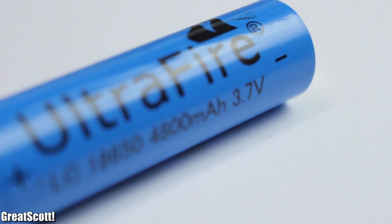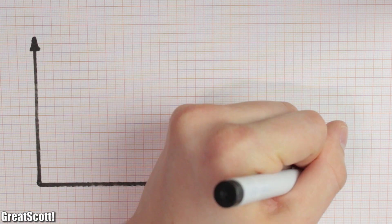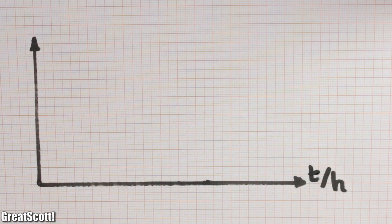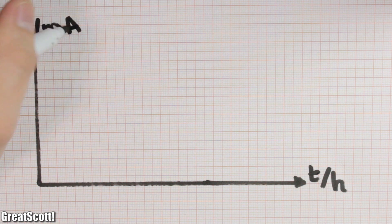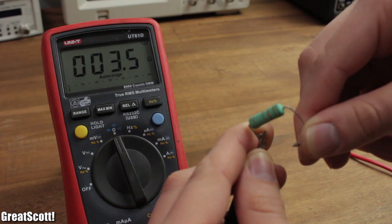First of all, what does milliamp hour mean? If we draw a coordinate system and label the x-axis time in hours and the y-axis current in milliamps, then we can monitor the current our battery can supply over time. We could use this big 3.6 ohm resistor as a load and write down the current draw every hour.